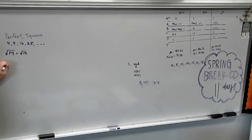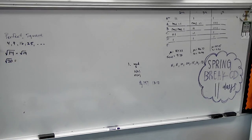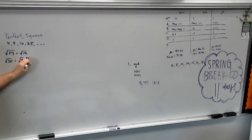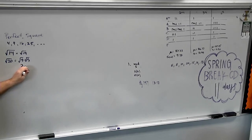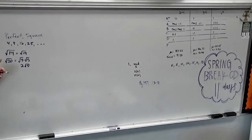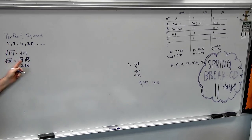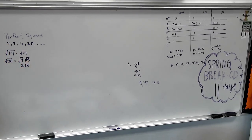If I see the square root of 20, I ask myself which one of these numbers goes into 20 evenly. 4 does. 4 times 5. What's the square root of 4? 2. And we're done — that's how easy radicals are. Always ask yourself what perfect square divides into it. Notice I always put it first: 4 times 5, and the square root of 4 is 2.